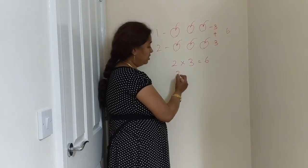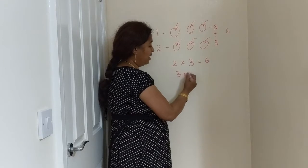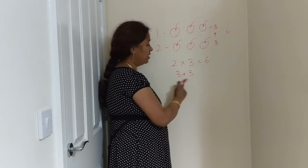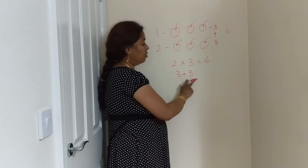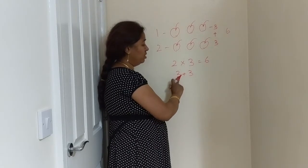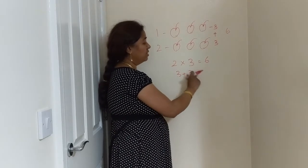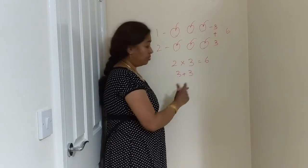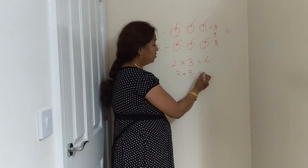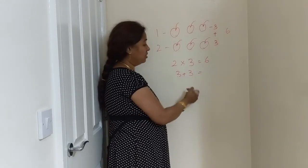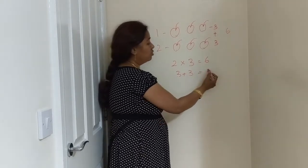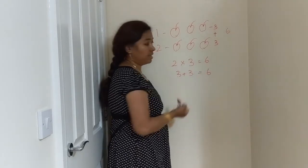2 times 3 is 3 add 3. 2 times 3 is 6. This is a small number, so 2 times 3 is 6.